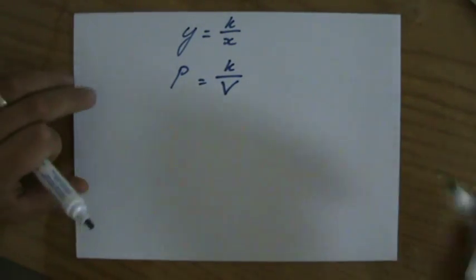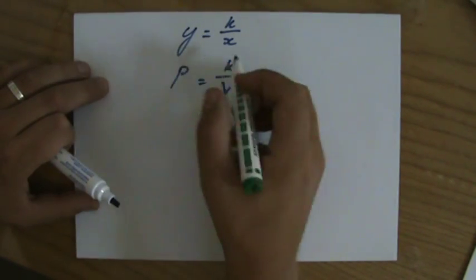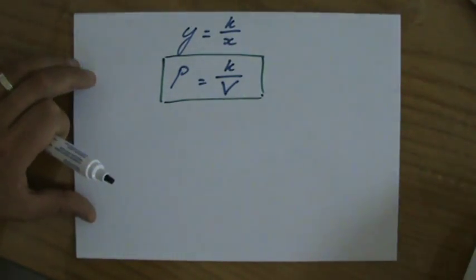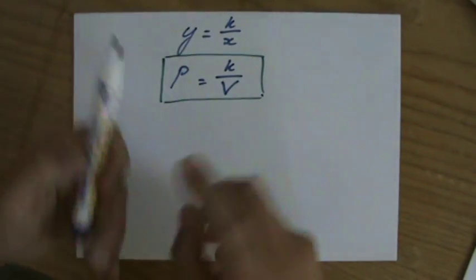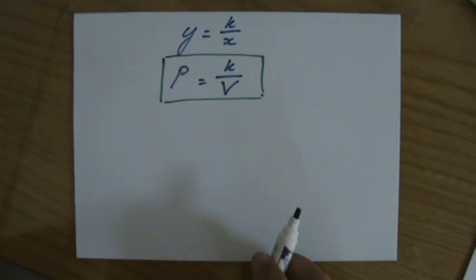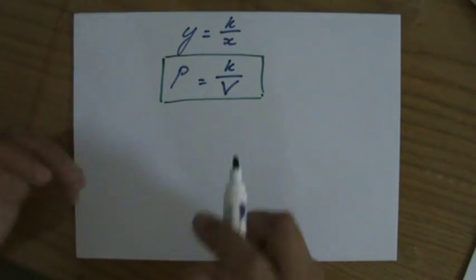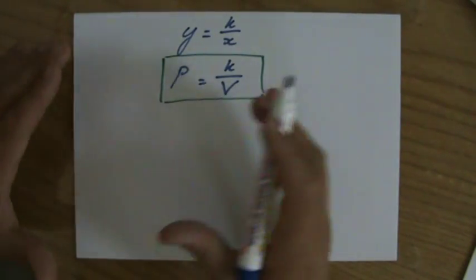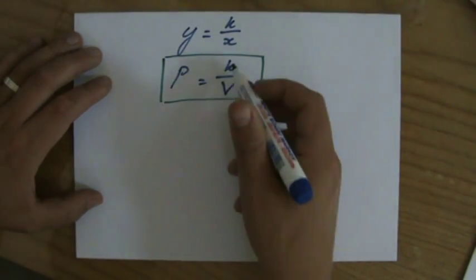Now with variation we have some very specific steps to take because we should be aware that we are going to find that constant now. And we can do that because they give us P equals 3 when V equals 5. So those two points belong to each other. Then we can find out K.